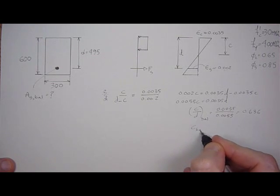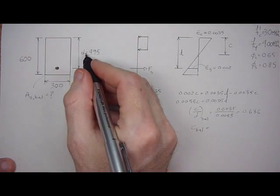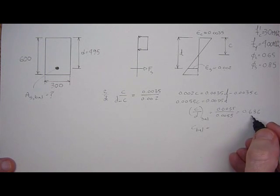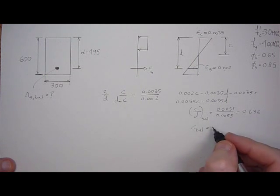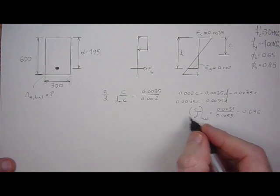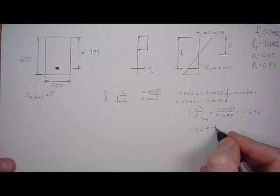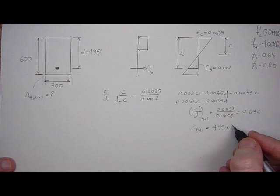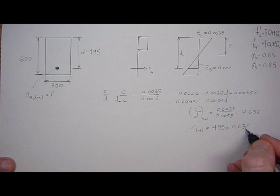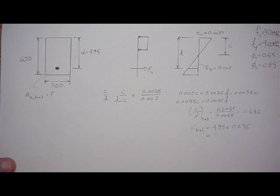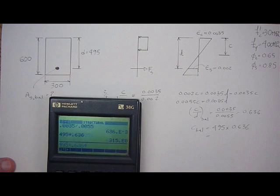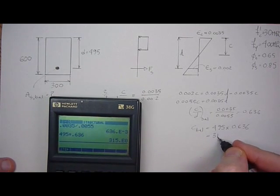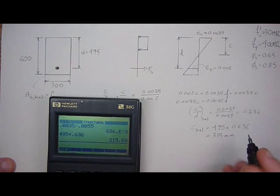C balanced would equal the depth, 495, times this C over D ratio. C over D equals 0.636. So C balanced equals D, which is 495 for this problem, times 0.636. The 636 will never change, it's independent of the problem we're dealing with. So 495 times 0.636 comes out to be 315 millimeters.